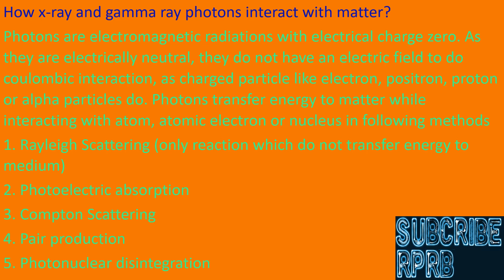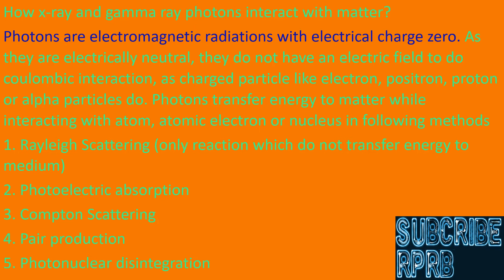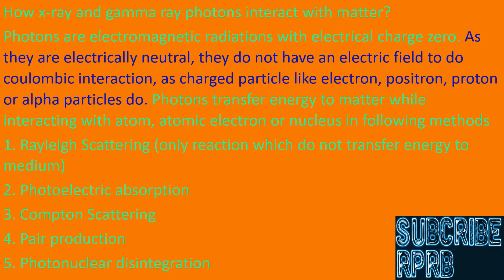How X-ray and gamma-ray photons interact with matter. Photons are electromagnetic radiations with electrical charge zero. As they are electrically neutral, they do not have an electric field to do coulombic interaction, as charged particles like electron, positron, proton, or alpha particles do. Charged particles can interact from far distances due to their electric fields.